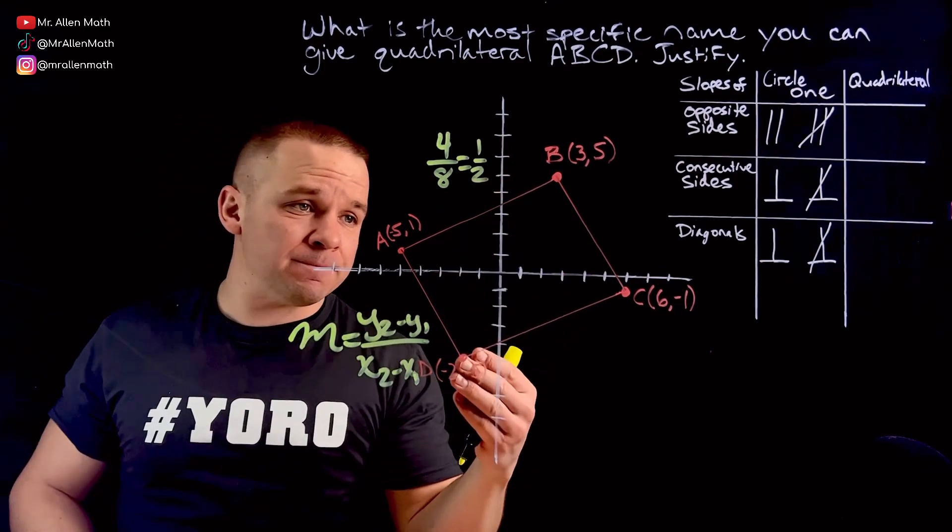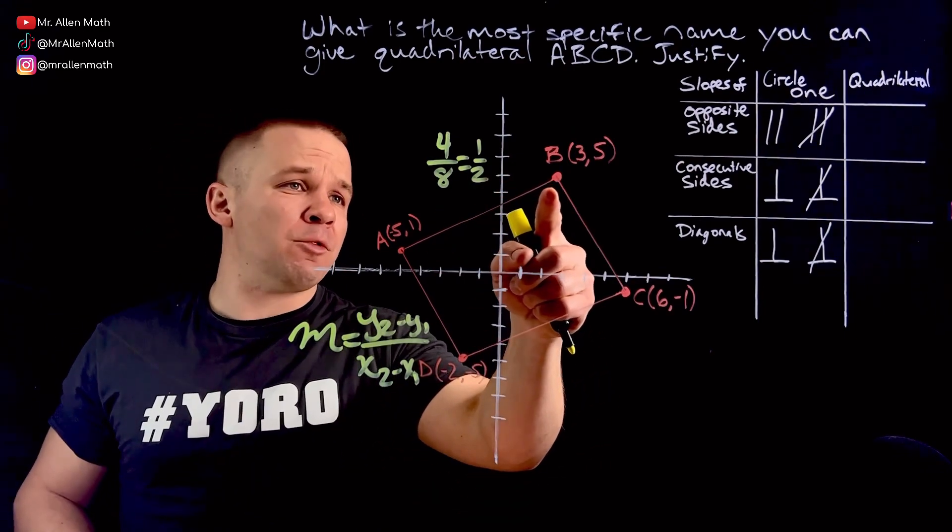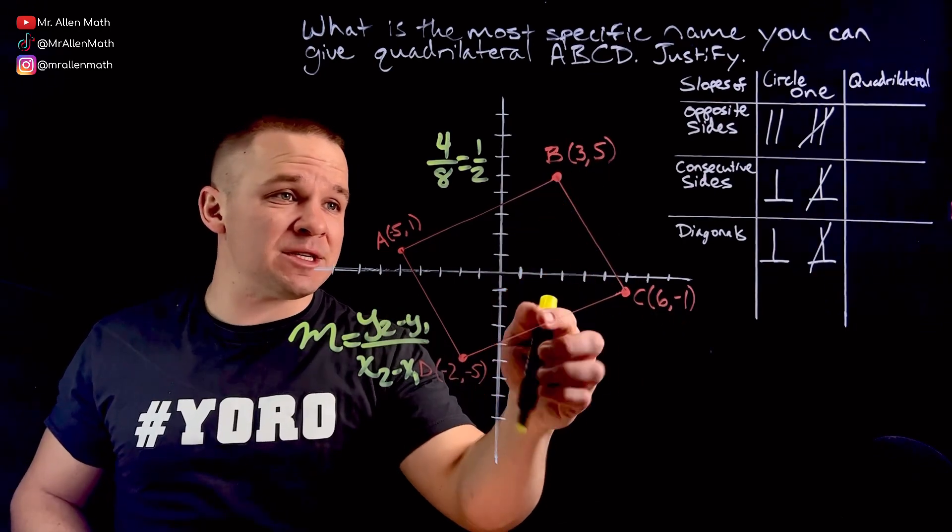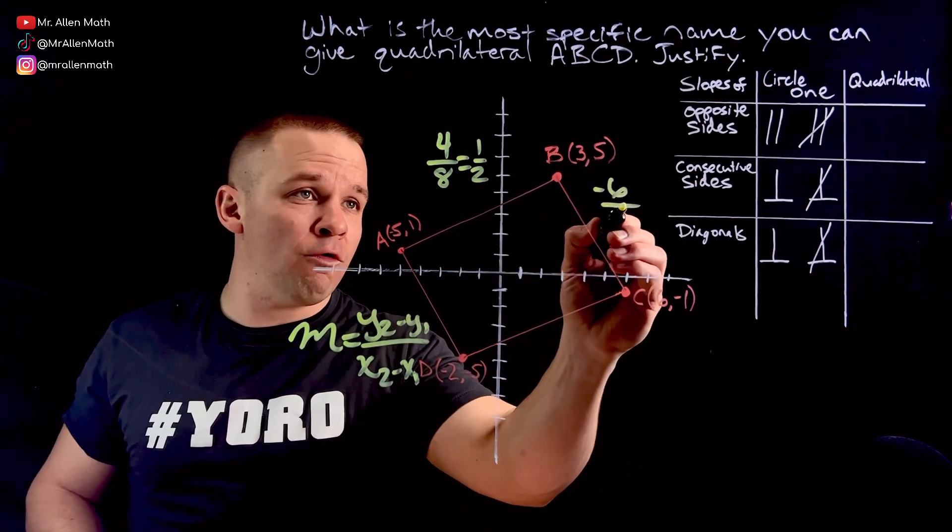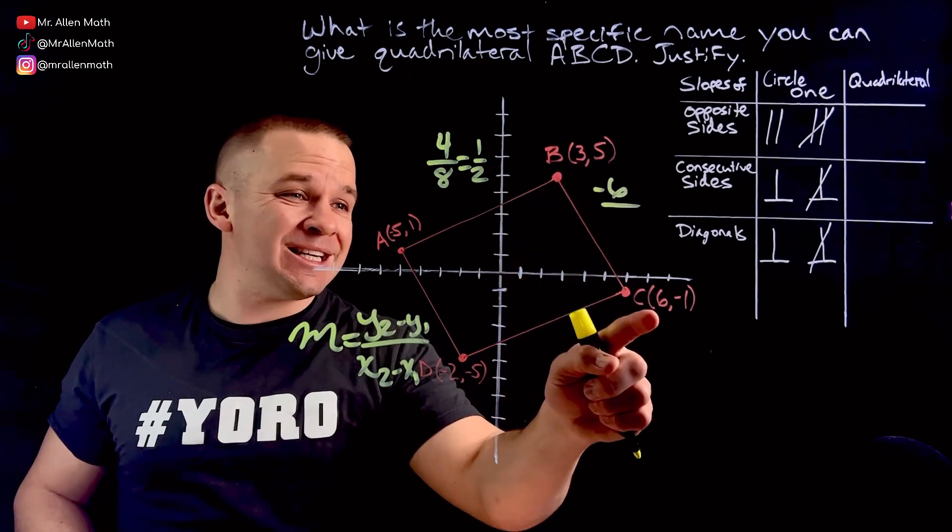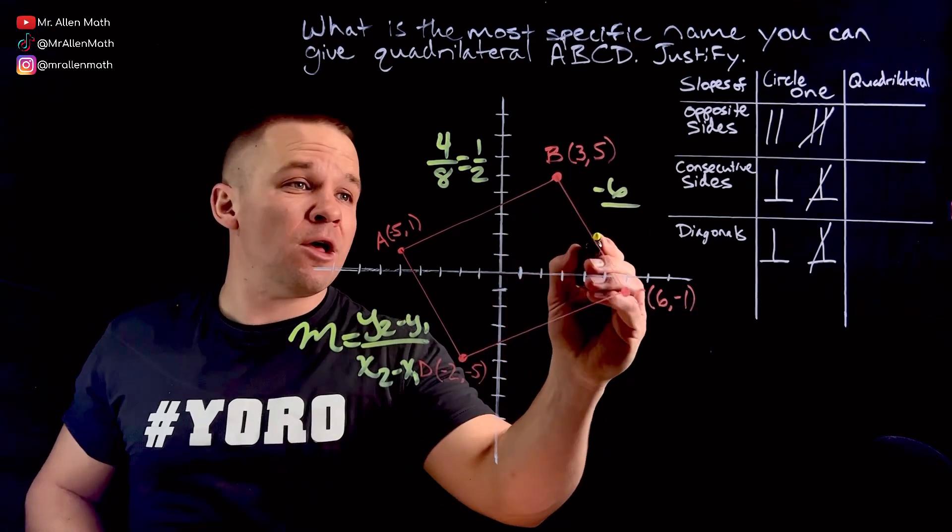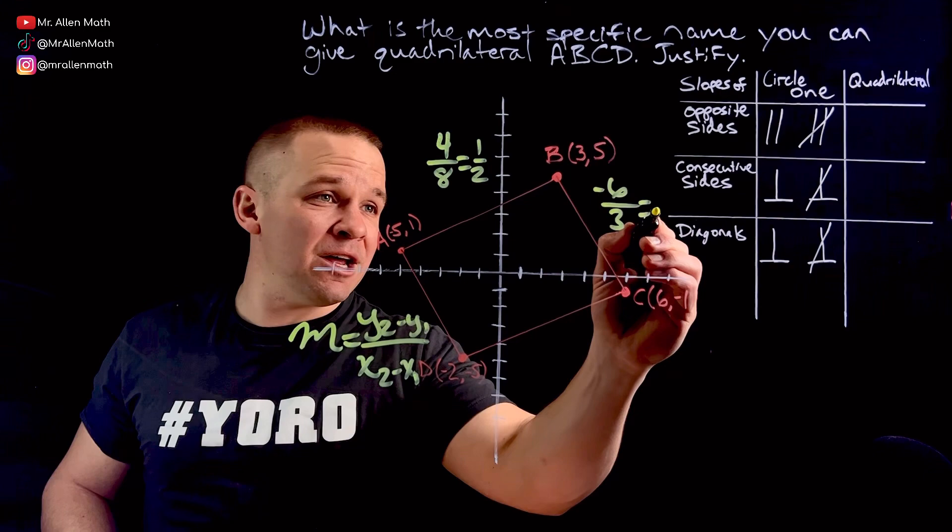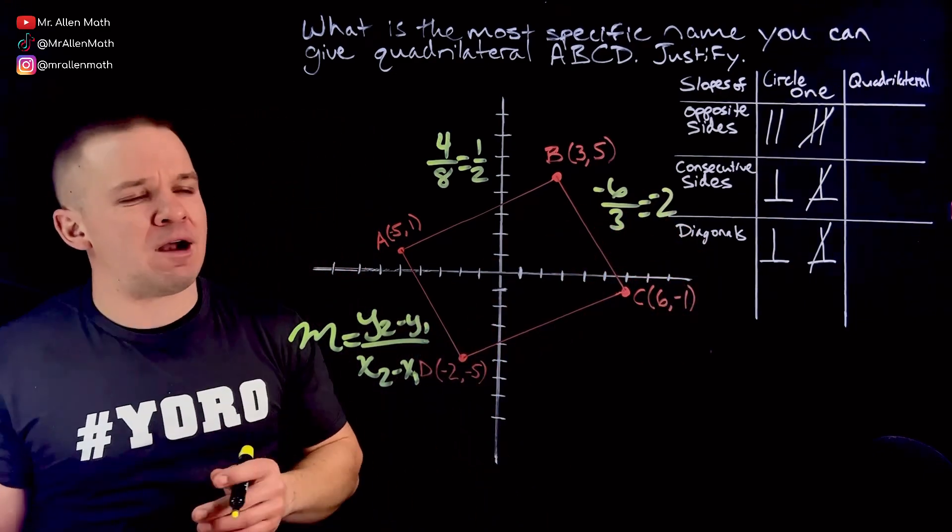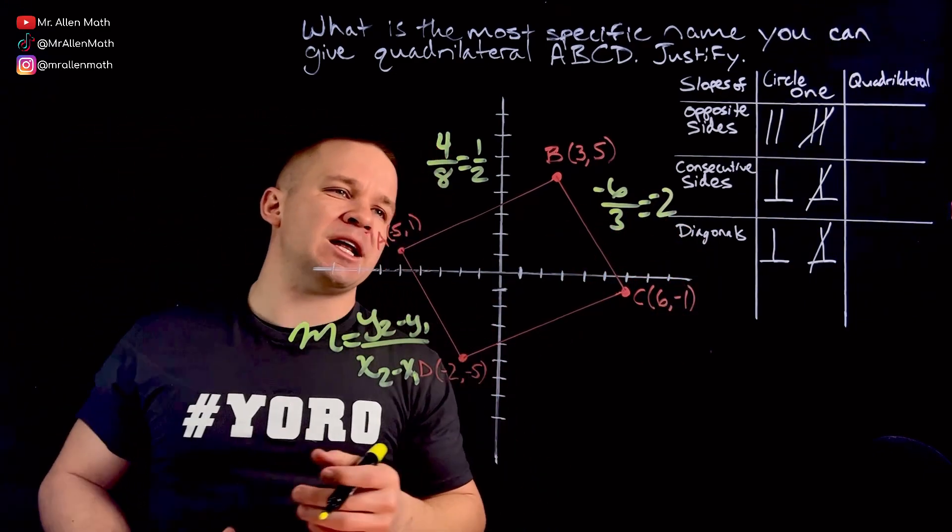I'm going to do the same for BC. So for BC, I'm going down from 5 to negative 1, so I'm going down 6, so negative 6 over. And then I'm going to go from 3 to 6 here, I'm going over to the right 3. So I'm going to get negative 2.